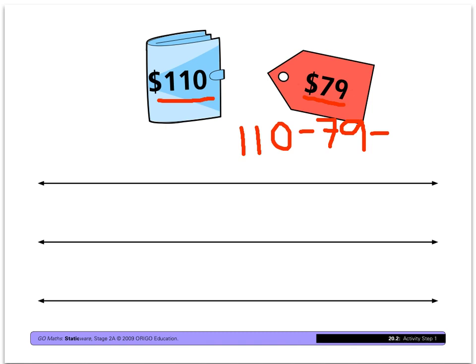And the way he did that was he imagined in his head a number line. And at this end of the number line was $79 and at this end of the number line was $110.